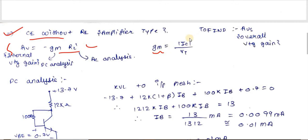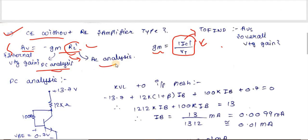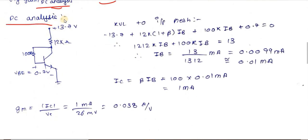To find gm we need Ic, so we perform DC analysis. For the internal voltage gain formula, we also need AC analysis to find RL'. DC analysis means open-circuiting all capacitors, leaving us with the voltage source, resistors, and the transistor.